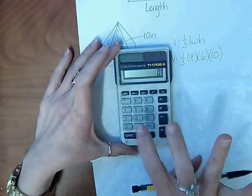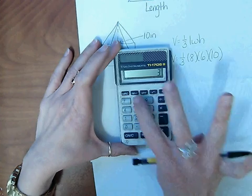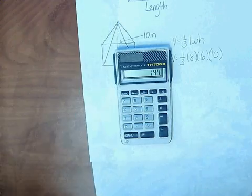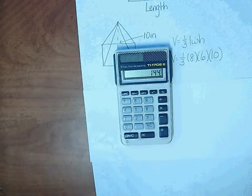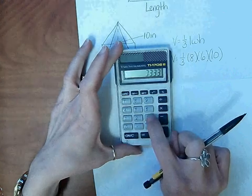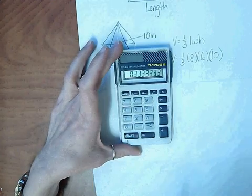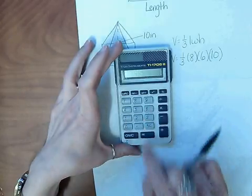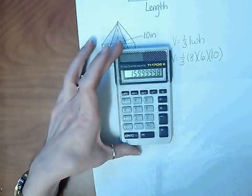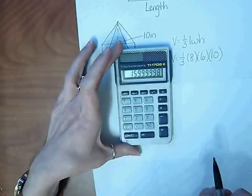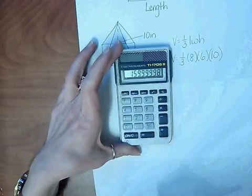If we did that and did 0.3 times 8 times 6 times 10, we get 144, which is not the correct answer. If we typed in 0.3 and filled the screen with threes times 8 times 6 times 10, we now get 159.9 repeated. Better than what we got when we plugged in 0.3, but it's still not the best answer.